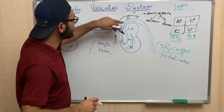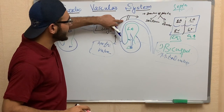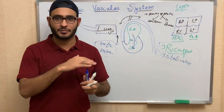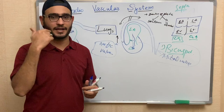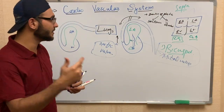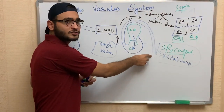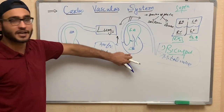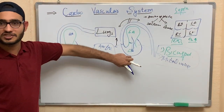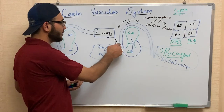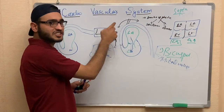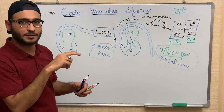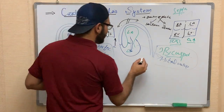The aortic arch supplies the neck, head region, and upper limb. This supply carries oxygenated blood because the left side of the heart contains oxygenated blood, so the aorta carries oxygenated blood to the neck, head, and upper limb regions.